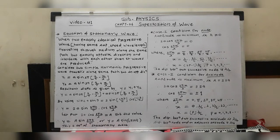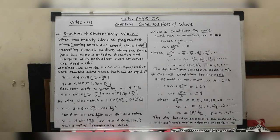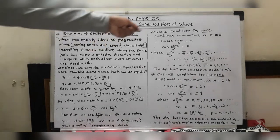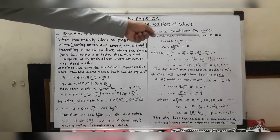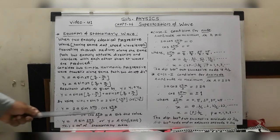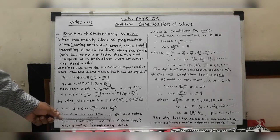Now we see how nodes and anti-nodes are formed using the conditions on the amplitude. The amplitude of the stationary wave can be maximum or minimum. First, we examine Case 1: the condition for a node. For a node, the amplitude of the stationary wave is minimum, meaning A = 0.